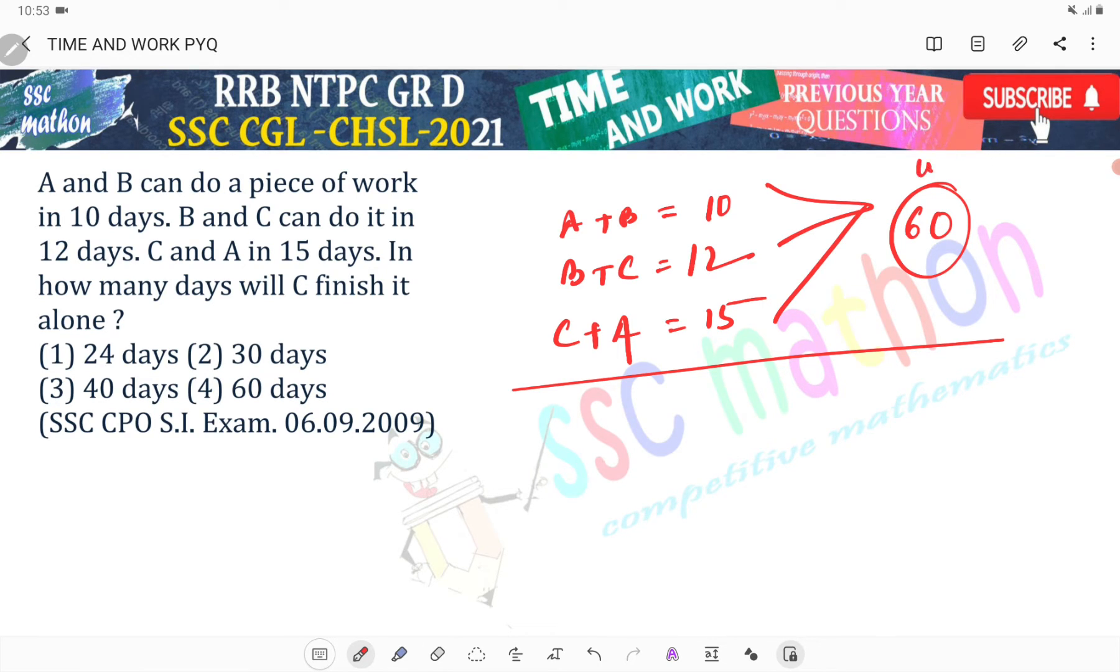60 units of work. 10 days total 60 units equals 6 units. 12 days 60 units equals 5 units. 15 days 60 units equals 4 units.